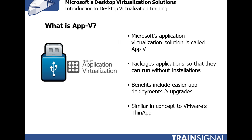Before the RDS demo, let's talk about AppV — Microsoft's application virtualization. AppV packages applications so they can run without installation. For example, you could package Microsoft Word so that the executable runs by itself without installing Word or affecting the registry. You can even run multiple versions of Word simultaneously on the same computer because the applications are virtualized. This provides benefits like easier application deployments, easier upgrades, and portability of applications. AppV is very similar in concept to VMware's ThinApp.